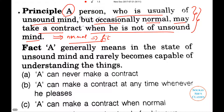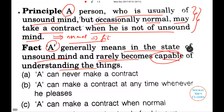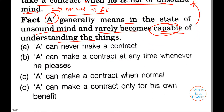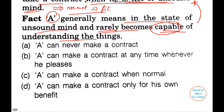Now let us look at the fact. A is generally in a state of unsound mind and rarely becomes capable of understanding things, but he does become capable. Rarely means that at least sometimes he is capable of understanding things, meaning based on this principle he may take a contract when he is not of unsound mind. So — A can never make a contract — this is absolutely wrong, he can.